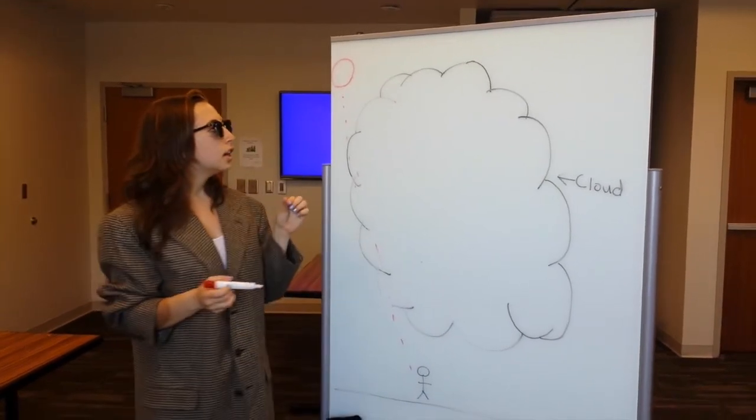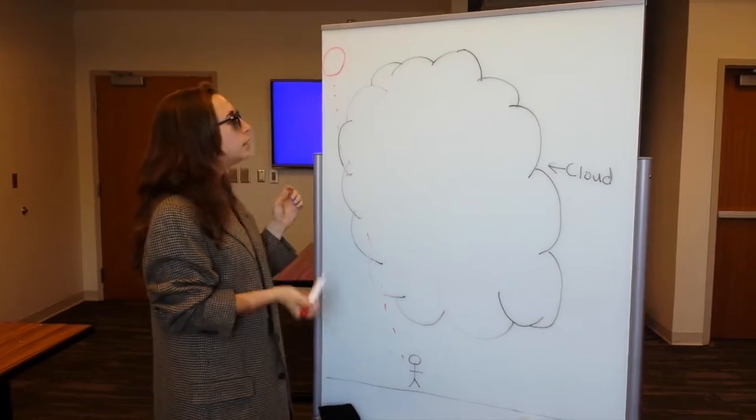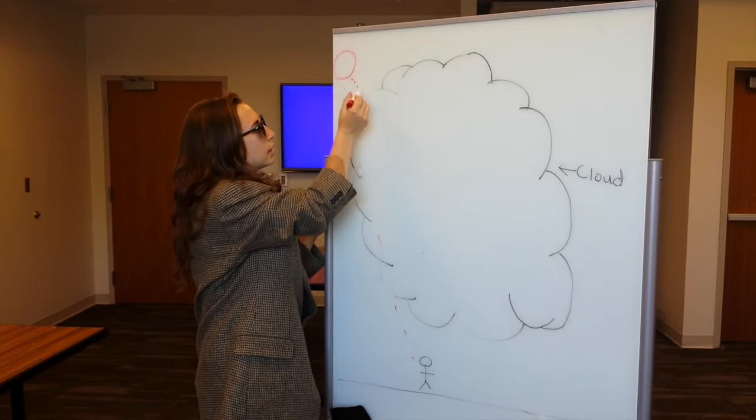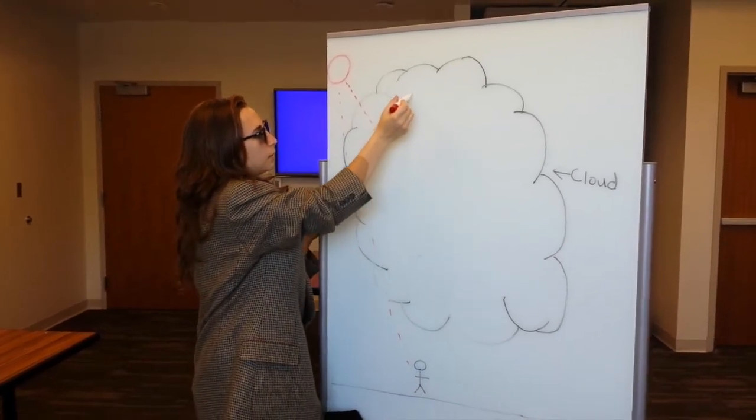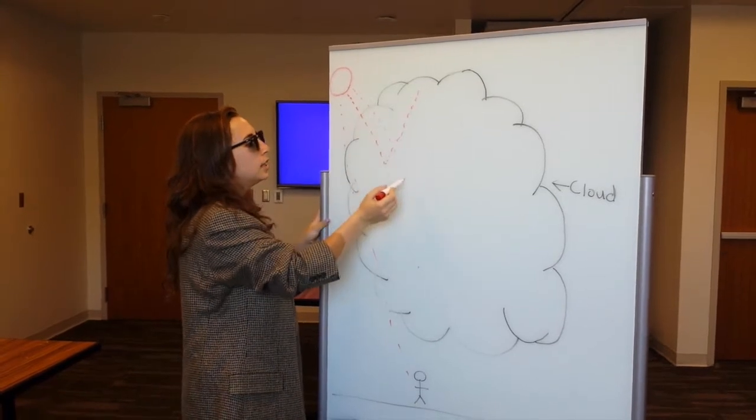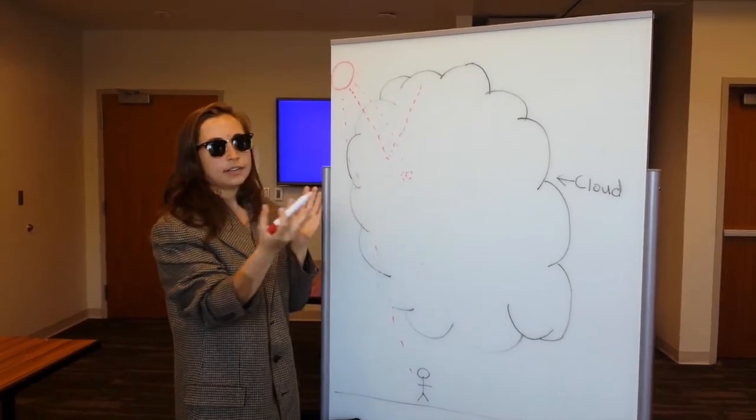But since there are clouds, a lot of different things are going to be happening. So the clouds prevent some of the solar radiation from reaching the ground because it comes down and then reflects back off up into the atmosphere. Or it can come down and be absorbed by the cloud, making the cloud's molecules have higher energy.